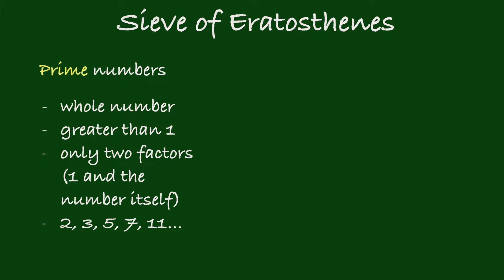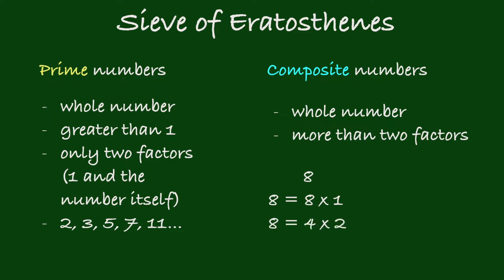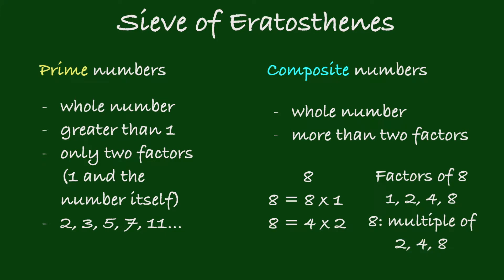On the other hand, a composite number, while it's also a whole number, has more than two factors. Let's take a look at 8. 8 is equal to 8 times 1, but it is also equal to 4 times 2. So 8 has 1, 2, 4, and 8 as factors — it has more than two factors.